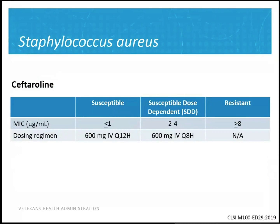The last one is for Staph aureus and ceftaroline. Here at the VA, we don't normally test for ceftaroline susceptibilities. Less than or equal to 1 is susceptible based on the normal 600 mg Q12-hour regimen. It also has a susceptible dose-dependent category with an MIC of 2–4, determined based on a Q8-hour regimen. If you're treating an invasive infection without susceptibilities, it may be prudent to start with a Q8-hour dosing regimen until you have the MIC value to know whether you can come down to Q12.